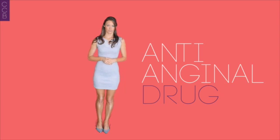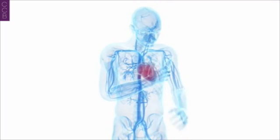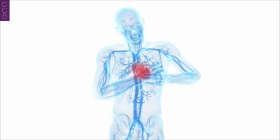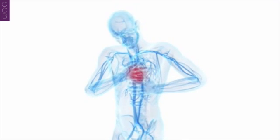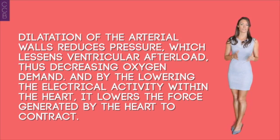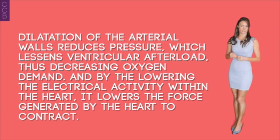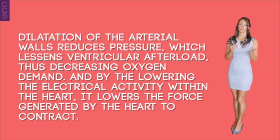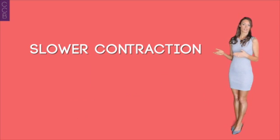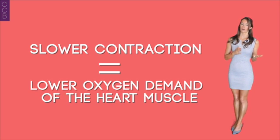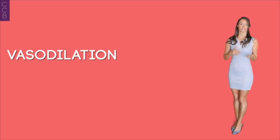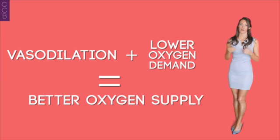As an anti-anginal drug — angina being the term for chest pain — the anti-anginal capabilities of calcium channel blockers derive from their vasodilation and cardio-depressant effects. Dilation of the arterial walls reduces pressure, lessening ventricular afterload and decreasing oxygen demand. By lowering electrical activity within the heart, the force generated by the heart to contract is also lowered. Slower contraction means lower oxygen demands of the heart muscle.